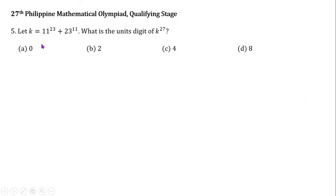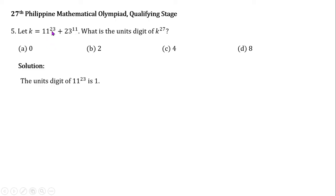Question number 5. Let k be equal to 11 raised to 23 plus 23 raised to 11. What is the unit's digit of k raised to 27? We should find the unit's digit of k first before determining the unit's digit of k raised to 27. We can apply modular arithmetic, but instead I'll look at the patterns of the unit's digit of the powers of 3. To find the unit's digit of k, we need the unit's digit of 11 raised to 23 and 23 raised to 11. Obviously, the unit's digit of 11 raised to 23 is 1.